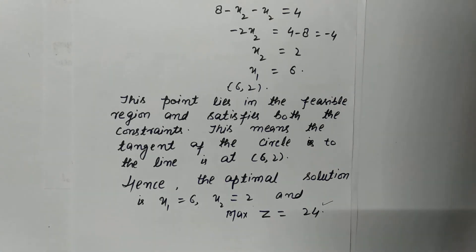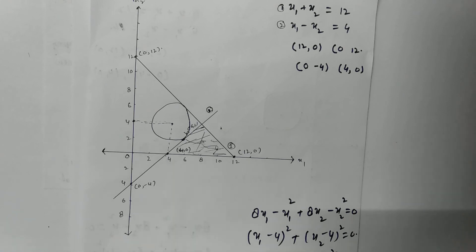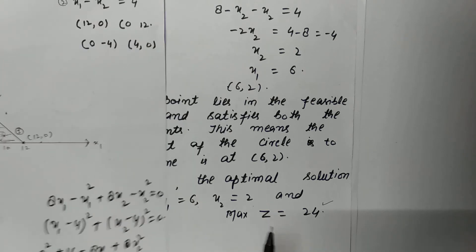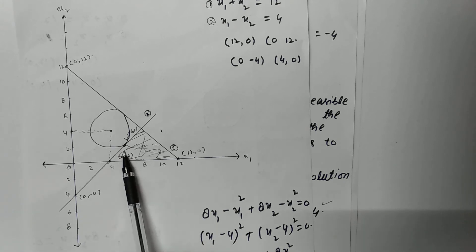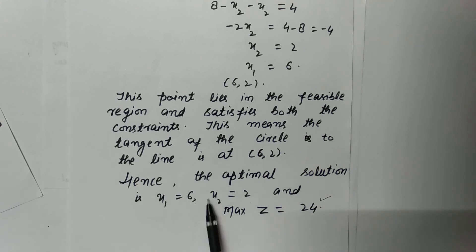We draw the circle which is tangent to the feasible region at point (6, 2). The radius of the circle was not given directly in the objective function, so we determine it from these points. Substituting x1 = 6 and x2 = 2 into the objective function gives the maximum value: z = 8(6) − 36 + 8(2) − 4 = 48 − 36 + 16 − 4 = 24. So the maximum z = 24 is the required answer. If you like my video, please subscribe to my channel and share. Thanks for watching.